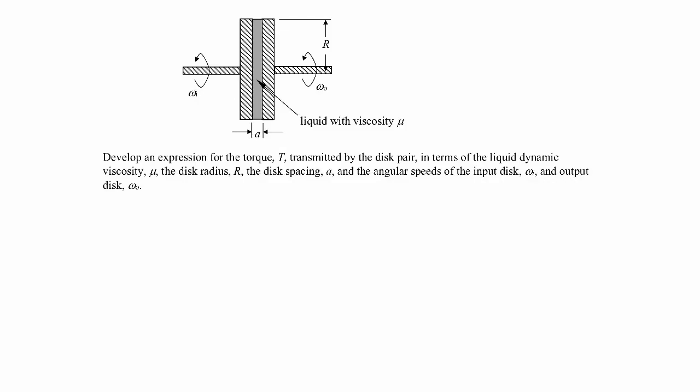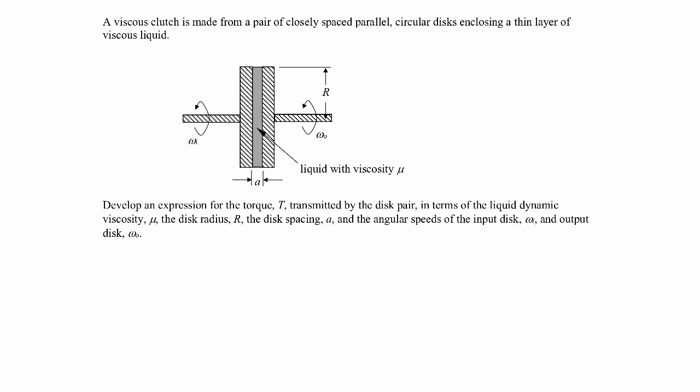In this example, we're told that we have a viscous clutch comprised of two closely spaced parallel circular disks. The disk on the left-hand side has a circular profile, same with the right-hand side.